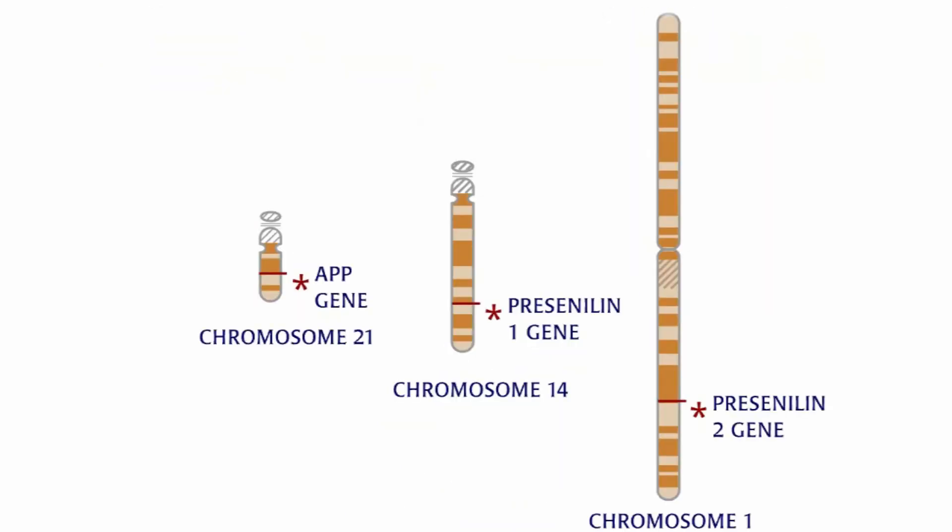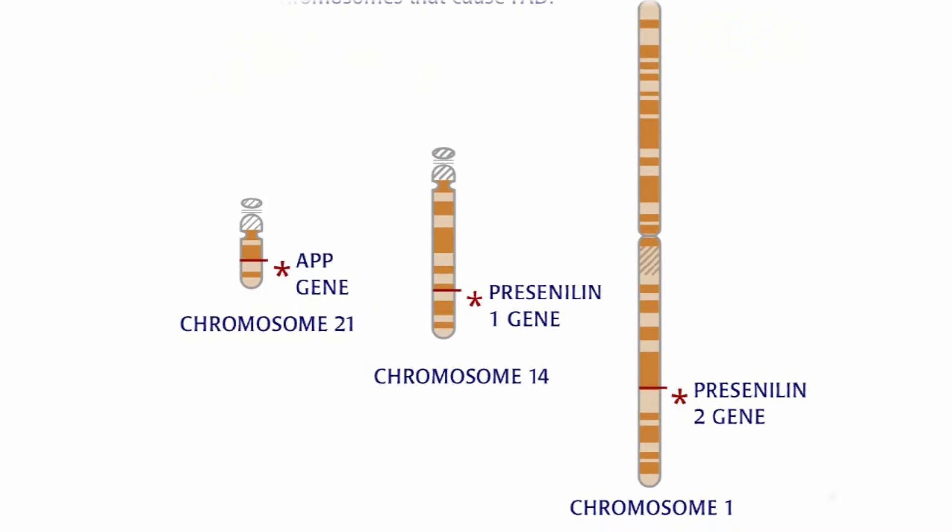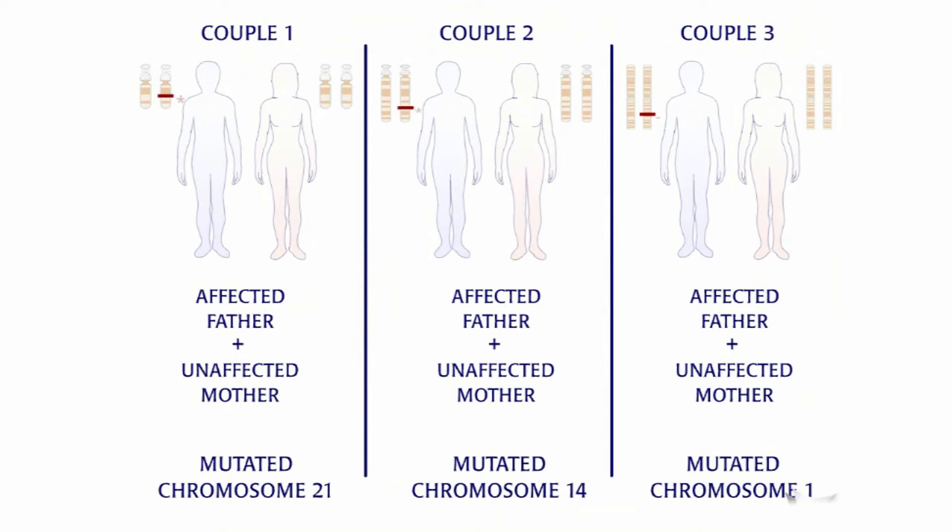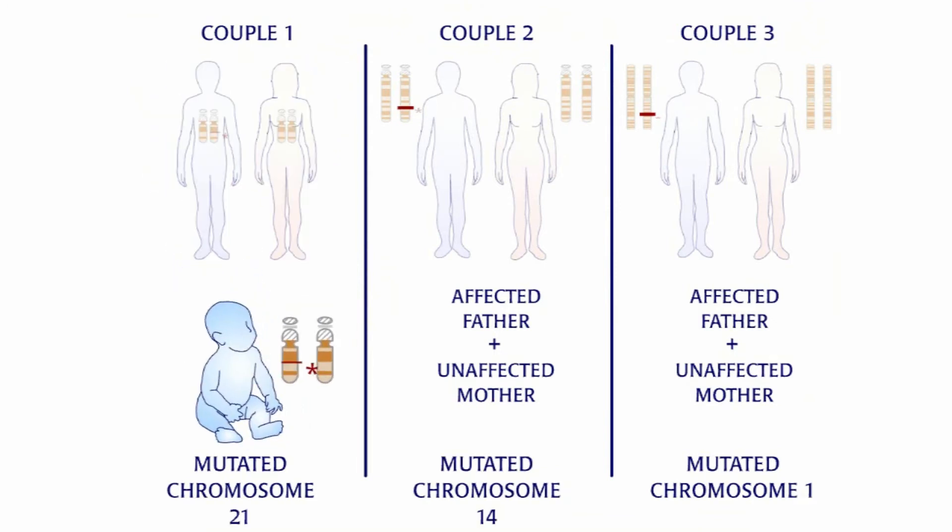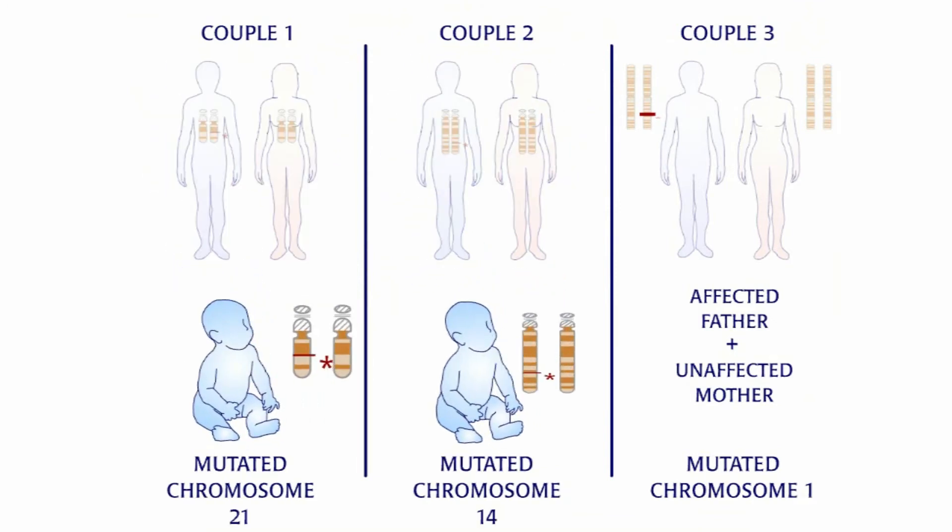Researchers have identified three separate gene mutations on three different chromosomes that cause FAD: presenilin-1 gene on chromosome 14, presenilin-2 gene on chromosome 1, and APP gene on chromosome 21. A person will develop FAD if they inherit any single one of these gene mutations.